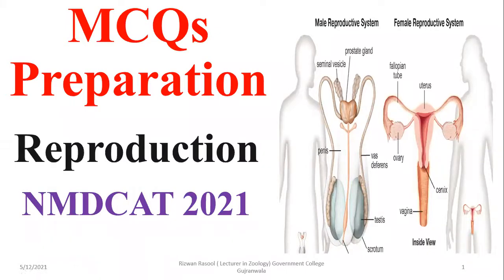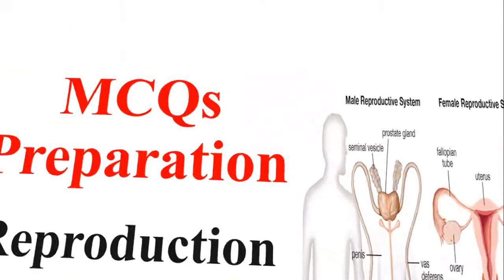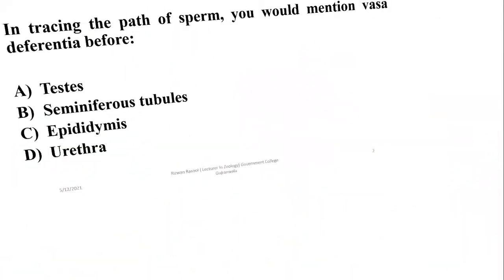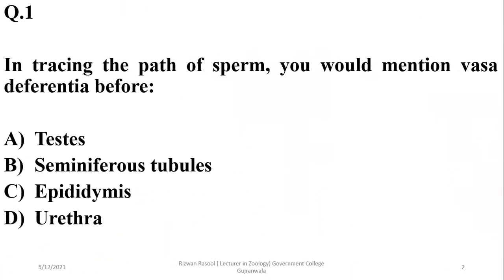In this video we are going to have a discussion about some important MCQs based on the reproductive system of humans. Let's move to question number one: increasing the path of sperm, you would mention vas deferens or vasa differentia.